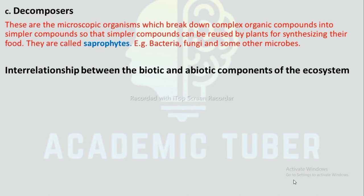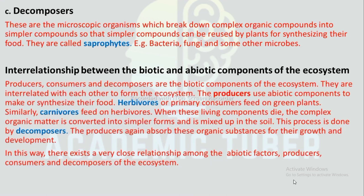Interrelationship between the biotic and abiotic components of the ecosystem: Producers, consumers, and decomposers are the biotic components of the ecosystem; they are interrelated with each other. Producers use abiotic components to synthesize their food. Herbivores or primary consumers feed on green plants, and carnivores feed on herbivores. When living components die, complex organic matter is converted into simpler forms by decomposers and mixed into the soil. Producers absorb these substances for their growth and development.